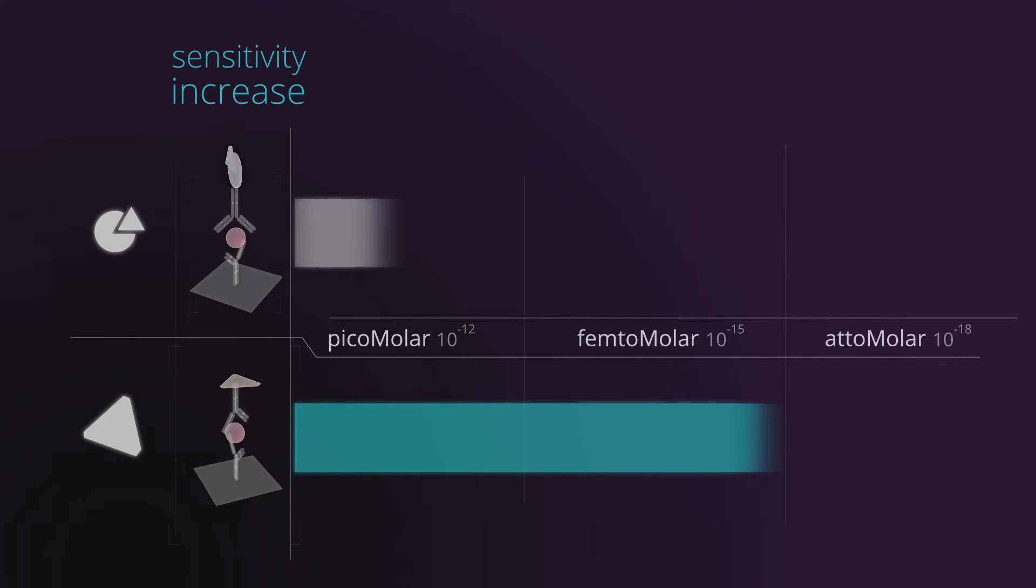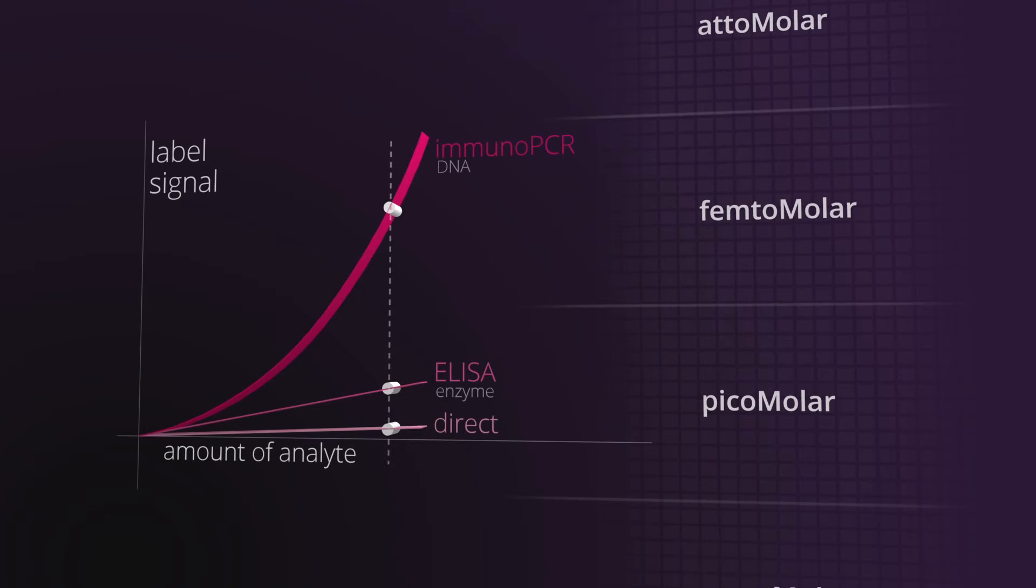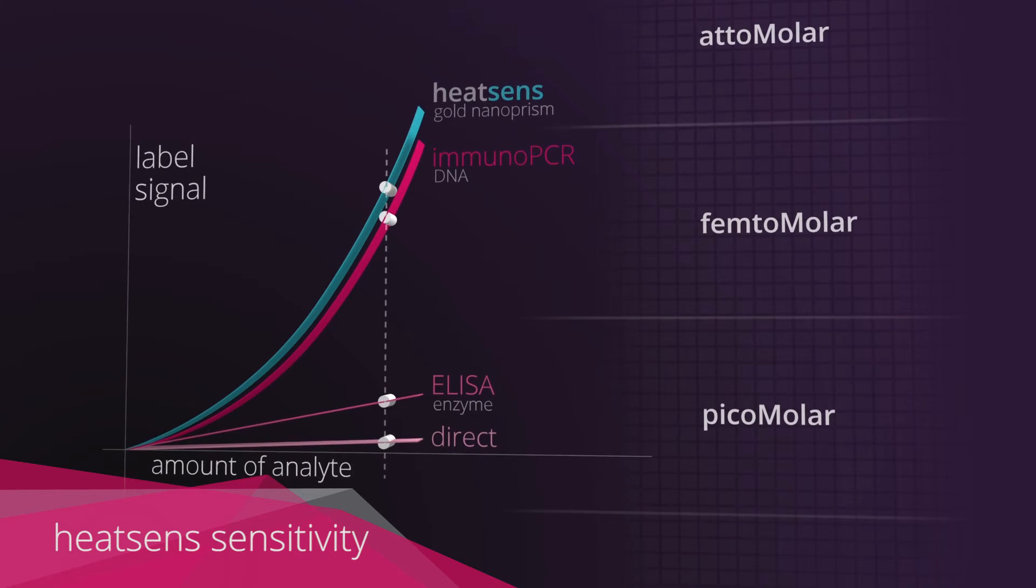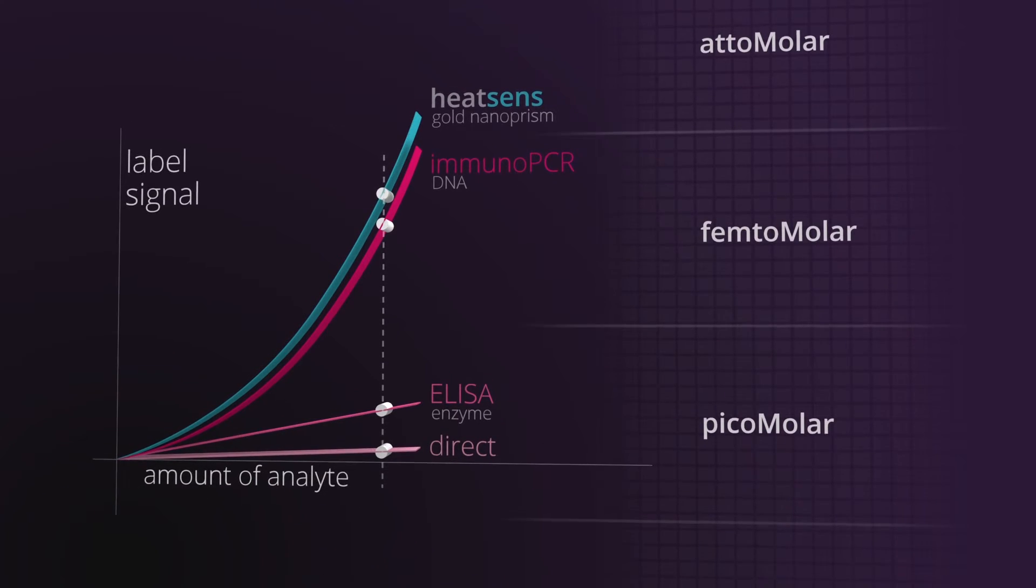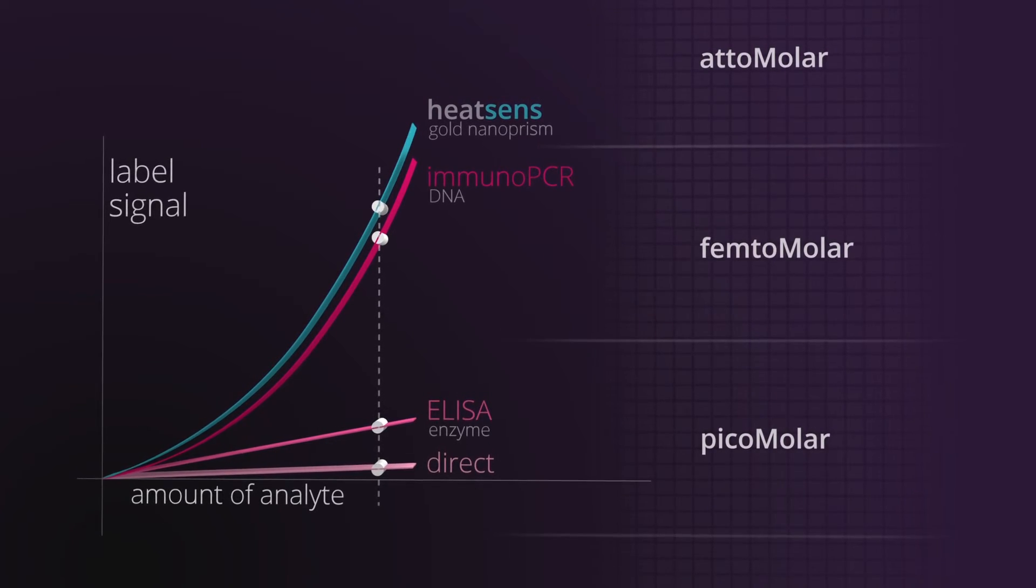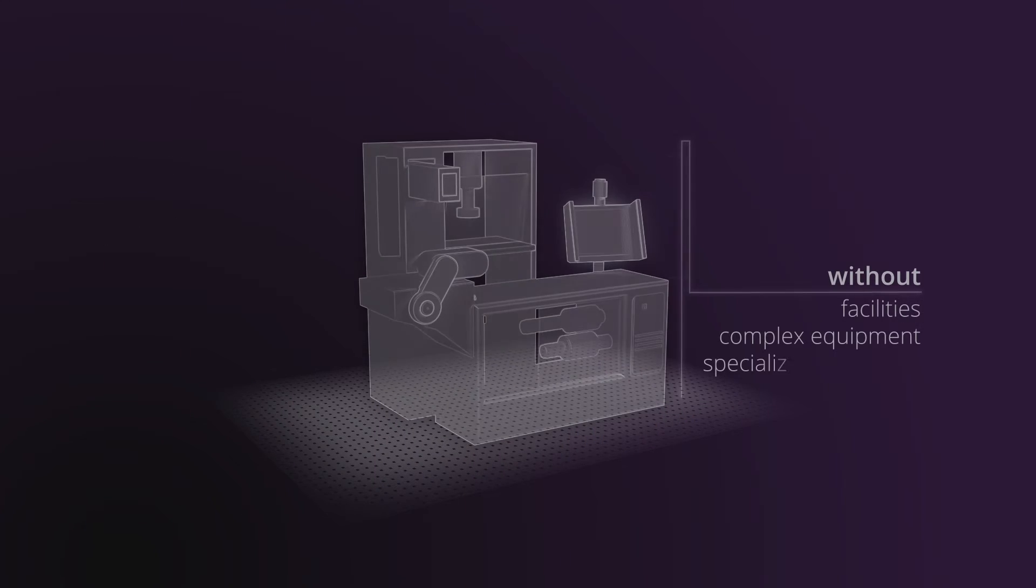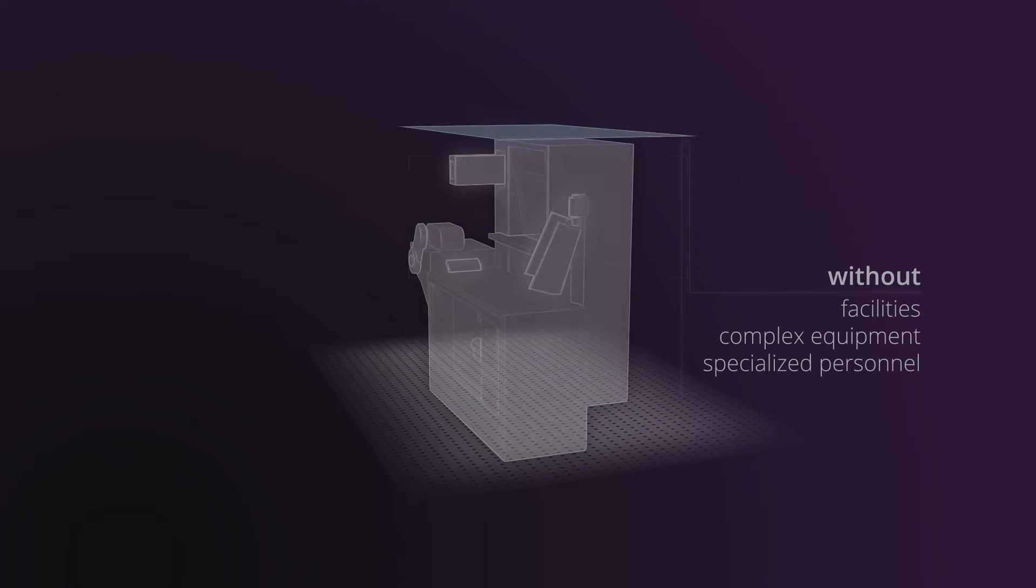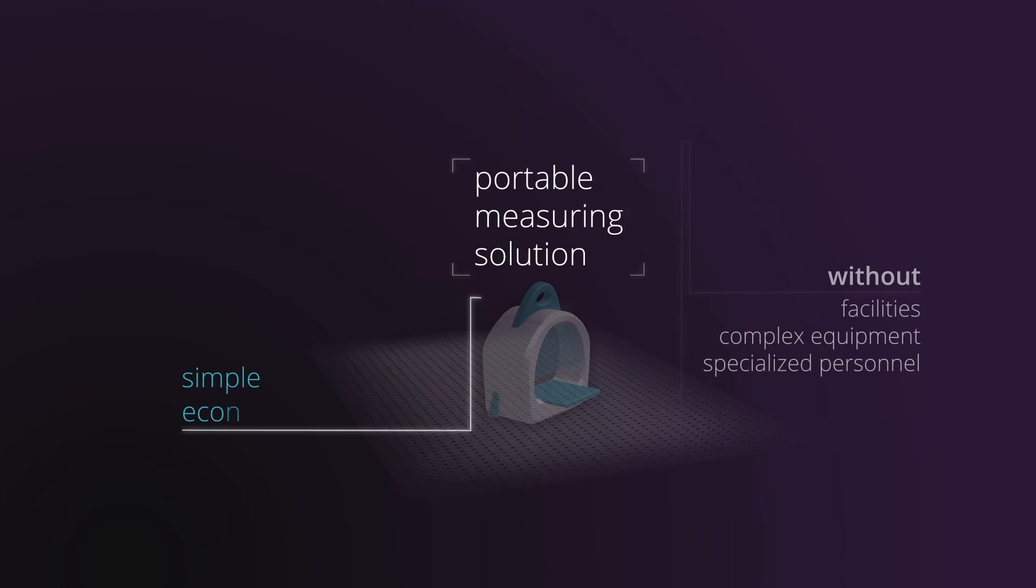In addition, the optimization of the test performance would allow the achievement of attomolar detection limit. This discovery is of great importance since the sensitivity level obtained by HeatSense is equivalent or superior to technology like immuno-PCR. Using this portable device, which is user-friendly and economic, you will not need sophisticated facilities, complex equipment or specialized personnel.